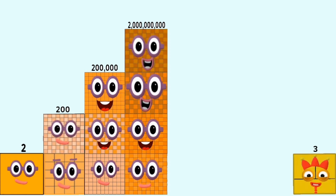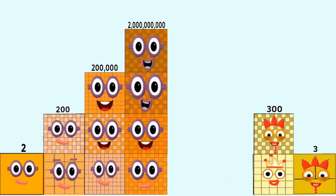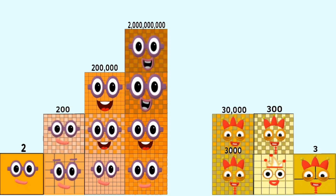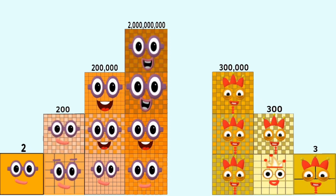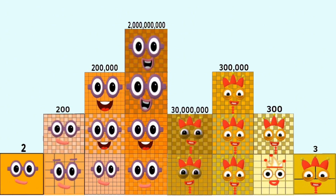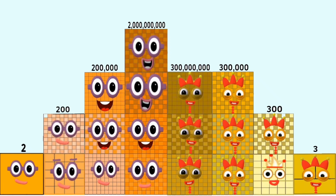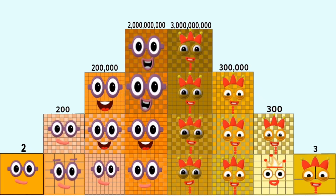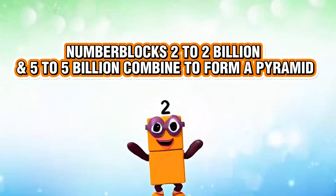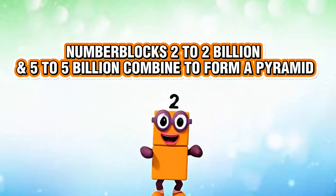The 3s series counts up: 3, 30, 300, 3,000, 30,000, 300,000, 3,000,000, 30,000,000, 300,000,000, 3,000,000.